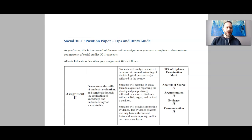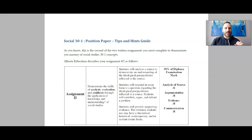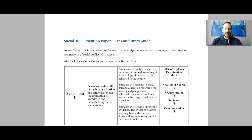There are four criteria for how you are marked in this particular assessment. There are six marks for what is known as the analysis of the source — that's the first paragraph. There are eight marks for argumentation, eight marks for evidence, and then eight marks for communication. We'll break all that down, so don't worry about understanding that as of this moment.